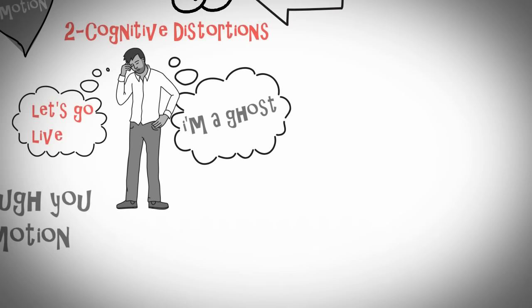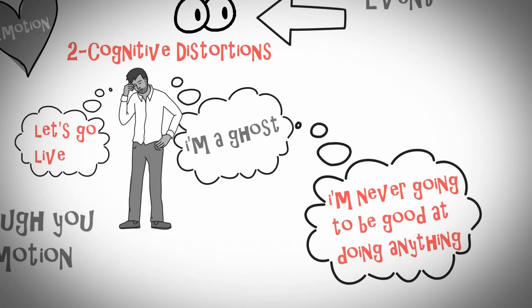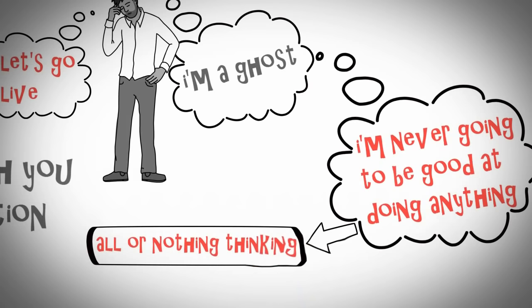audience got bored and left. As a result, you think to yourself that you have no chance of becoming a comedian or that you will never be good at doing anything. This kind of cognitive distortion is called all-or-nothing thinking: either I'm good at this or I will never be, even if I continue to practice.